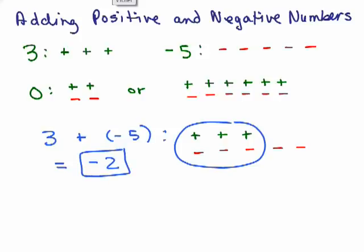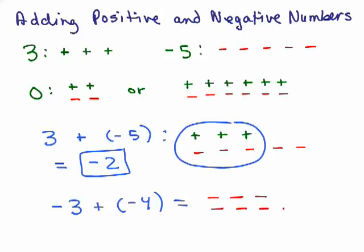What if you wanted to do negative 3 plus negative 4? By the way, you don't have to put parentheses around negative numbers, but I'm doing it because some people get confused if they have a plus sign right next to a negative sign. Well, I've got 3 negatives and then 4 more negatives. Does anything cancel out? Nope. I just have a whole bunch of negatives, so my answer is going to be negative 7.